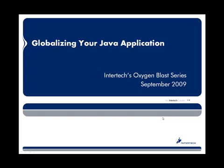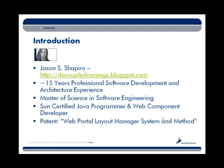I'll tell you a little bit about myself. My name is Jason Shapiro. I have around 15 years of professional software development and architecture experience, mainly working in these latter years with business intelligence software and portal applications. I hold a Master of Science in Software Engineering and a couple of certifications, including certified Java programmer and web component developer. If you're interested in following projects I'm working on, you can subscribe to my blog at decoupledmusings.blogspot.com.